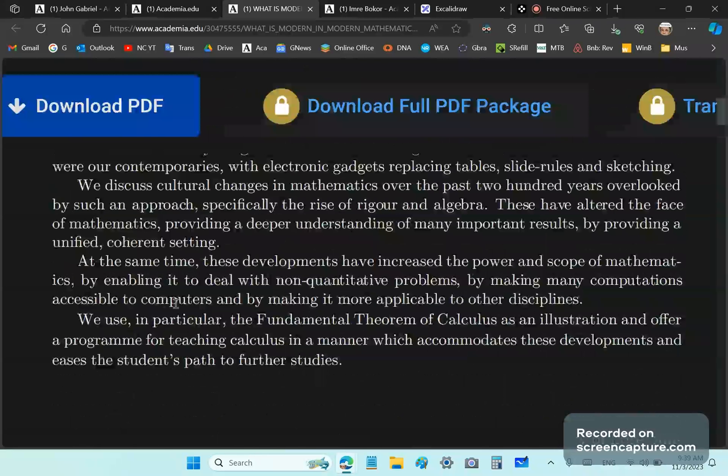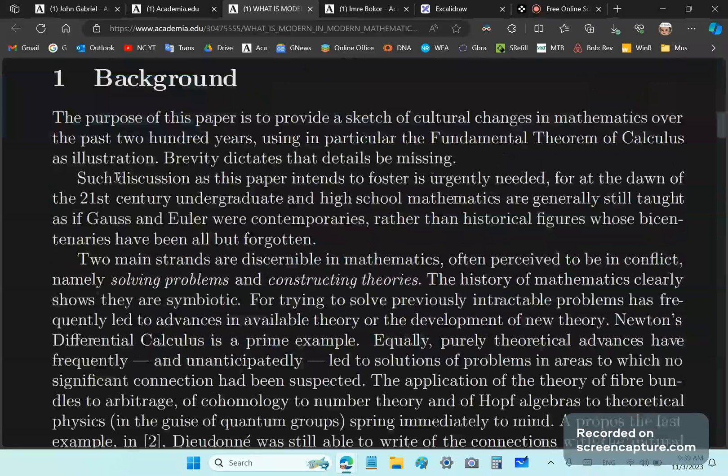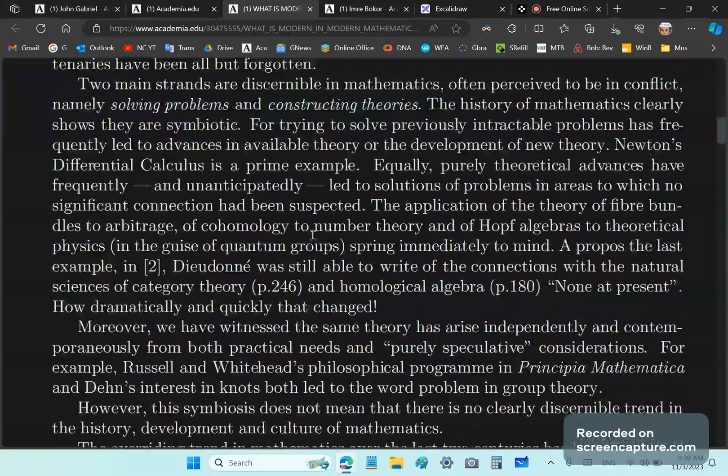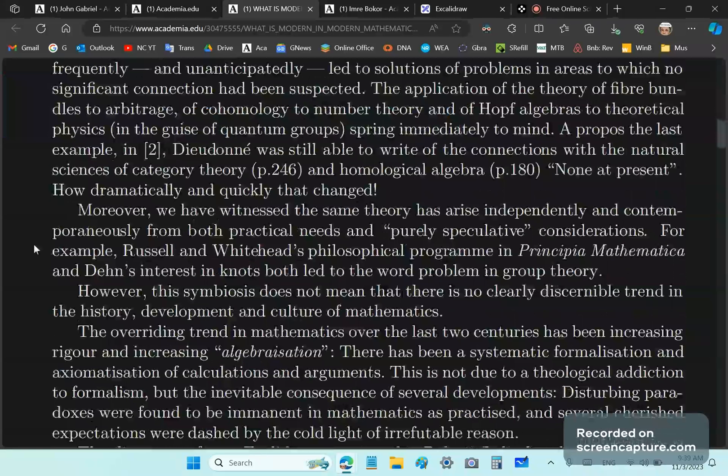She says the purpose of this paper is to provide a sketch of cultural changes. Brevity dictates that details be missing. We know she's going to toss out things there which assume that you've already learned a lot of mainstream mathematics. She starts talking about the theory of fiber bundles to arbitrage of cohomology to number theory, crap which has a lot to do with set theory and group theory. All anti-mathematical garbage.